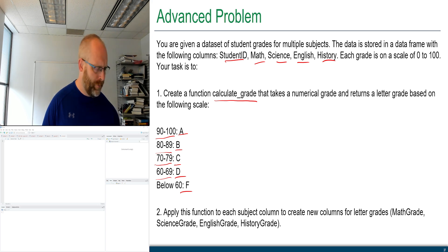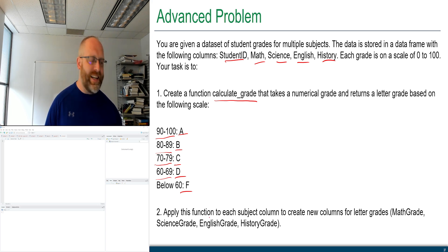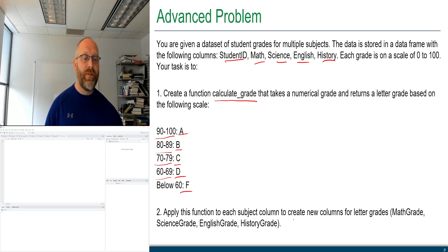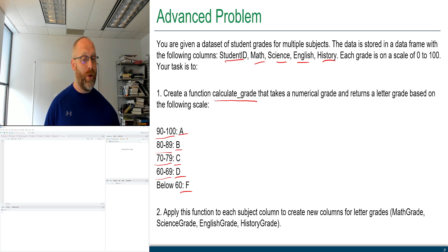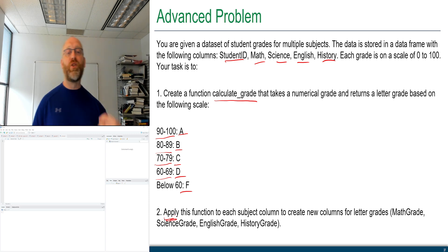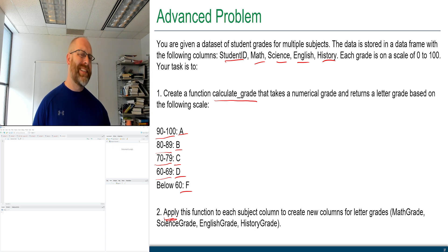Then we're going to apply this function to each subject column to create new columns called math_grade, science_grade, english_grade, and history_grade. When applying it, we want to make sure we know which applied family function we are using, because they all interact slightly differently.